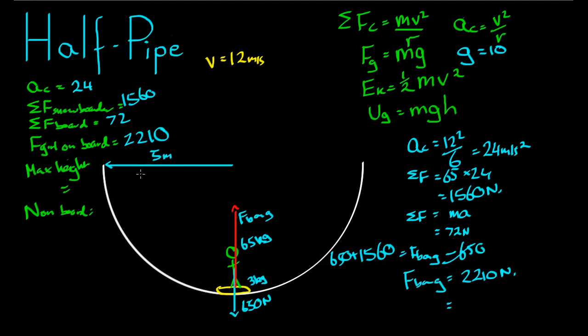Now the max height reached by this girl and the board. She has a certain amount of kinetic energy down here. And as she moves up, if there's no friction, that kinetic energy becomes gravitational potential energy. Let's work out the kinetic energy down here. Ek is equal to 1/2 Mv squared. Well, she's got to carry the board up with her in our jump. So we'll include the board in our calculation. That's 1/2 times the combined mass, 68, times V squared, that's 12 squared. 0.5 times 68 times 12 squared comes to 4896 joules.